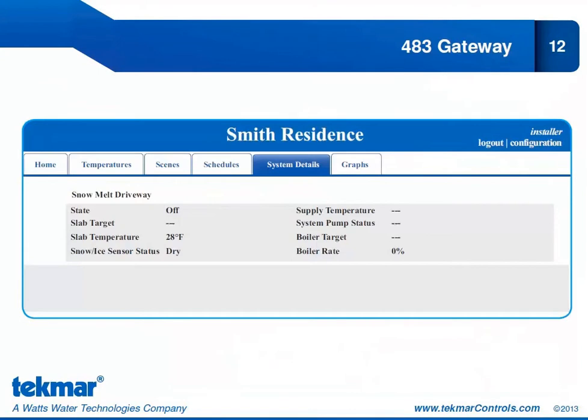Here is another screenshot showing the system details page for 'snow melt driveway.' My current state is off, so there is no slab target shown. My slab temperature is 28 degrees and my snow/ice sensor status is dry, so no moisture is being detected. If it were operational, I could also see my supply temperature, system pump status, boiler target, and boiler rate. You can also graph that information to look at how the system is operating over a longer period of time.